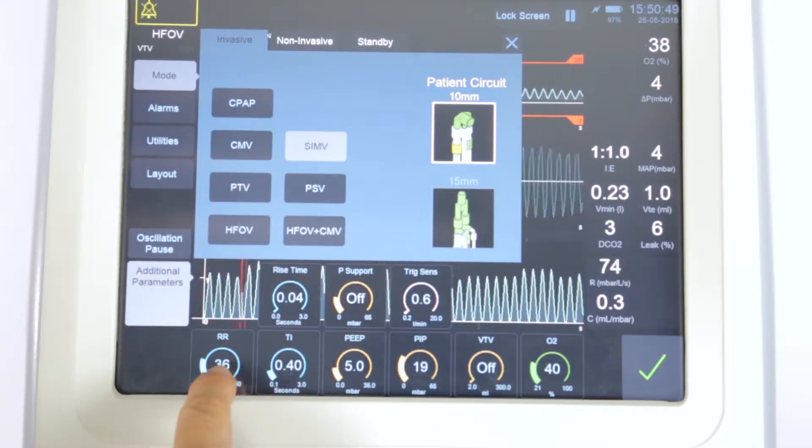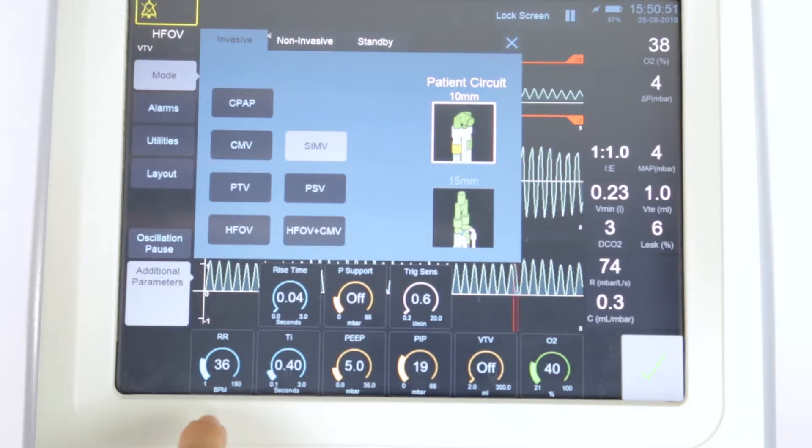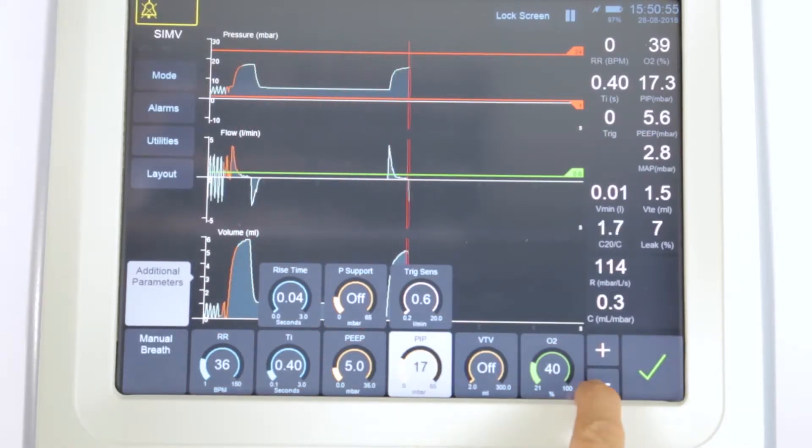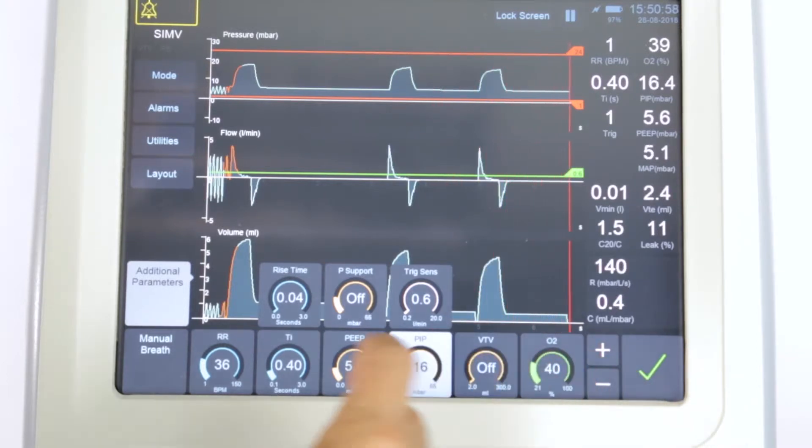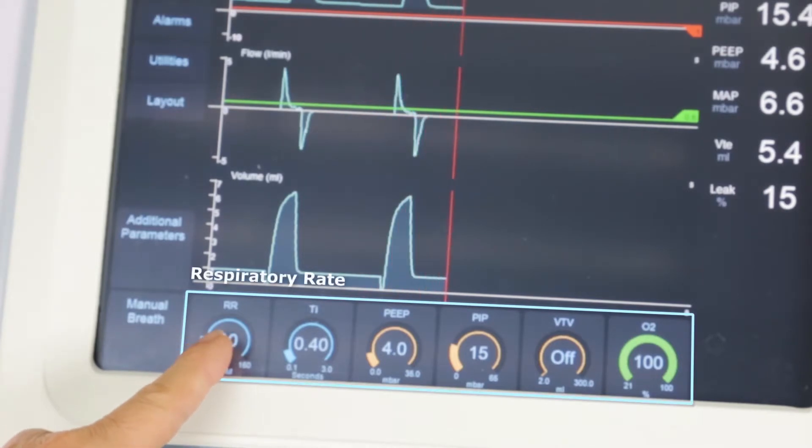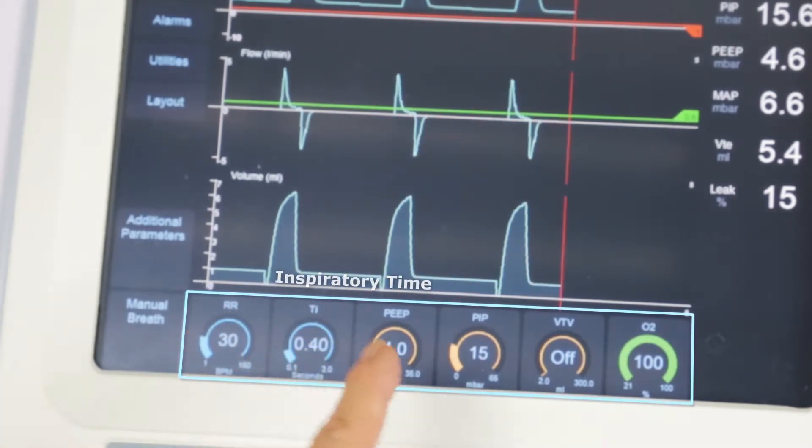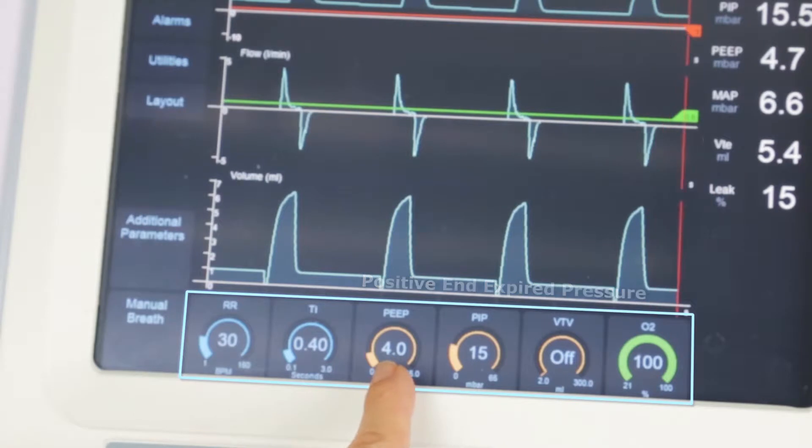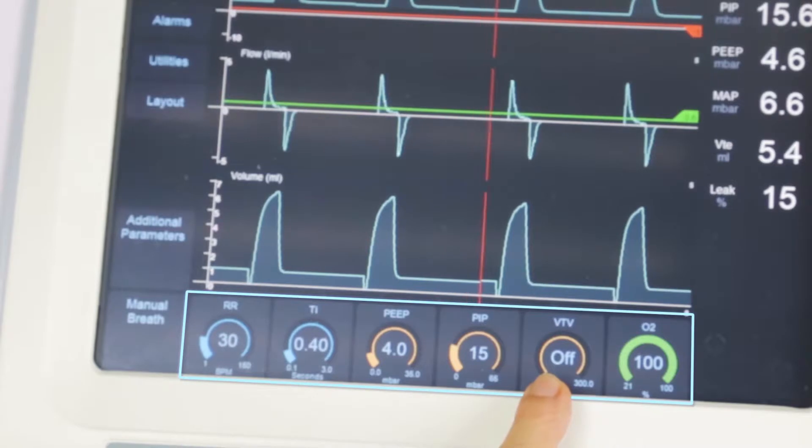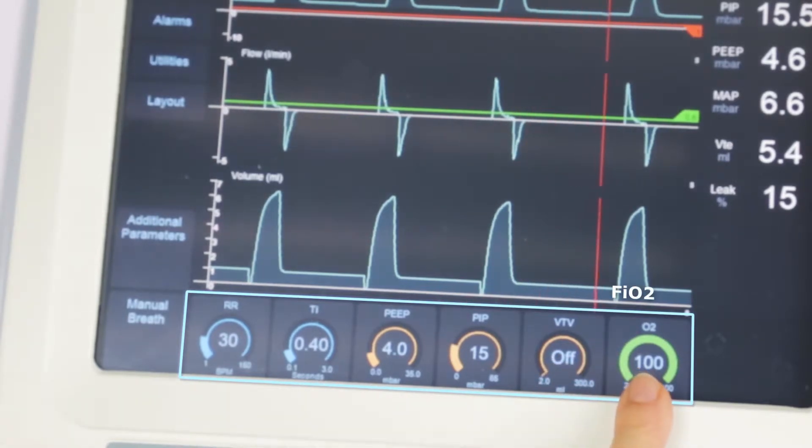Once selected, the settings window will be displayed, along with additional parameters. Set your parameters in accordance with the clinician's orders and the infant's condition. You will set respiratory rate, inspiratory time, positive end expiratory pressure, peak inspiratory pressure, volume-targeted ventilation which is optional, and the fraction of inspired oxygen.